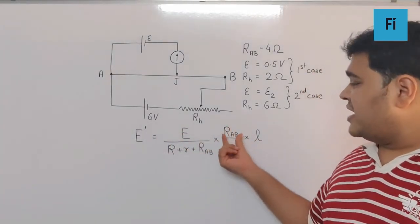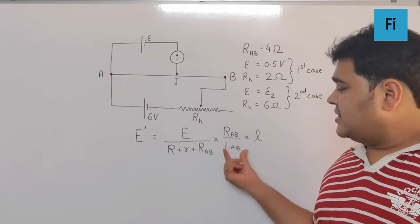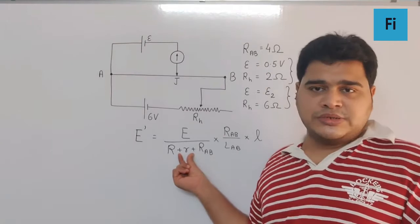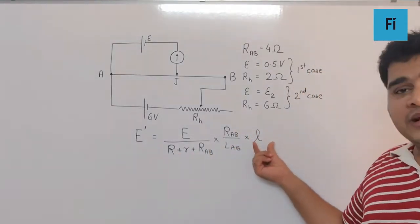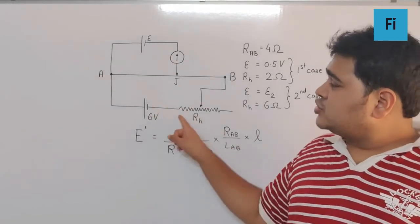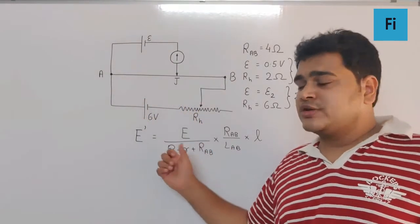The wire resistance and length remain the same, the internal resistance is a constant, and the balancing length is also the same. In fact, there is no internal resistance mentioned, so we can assume this to be zero.